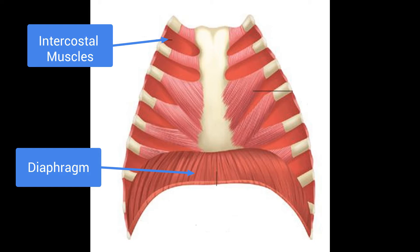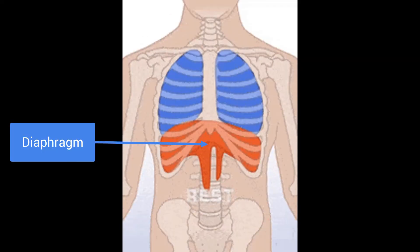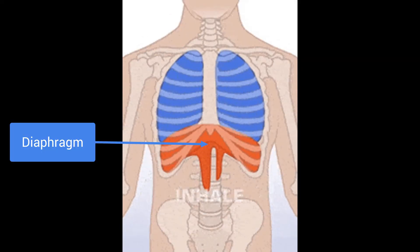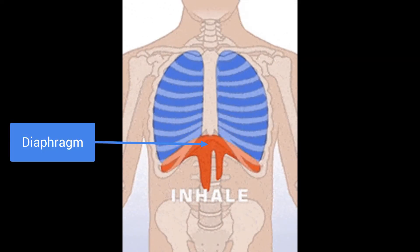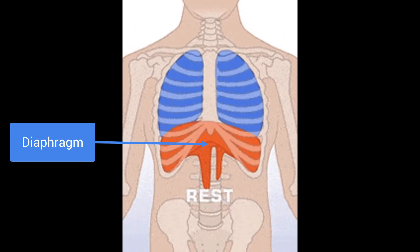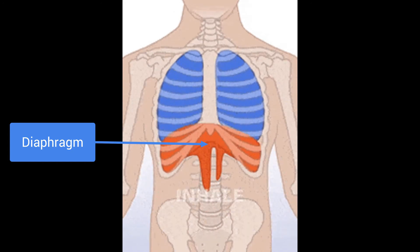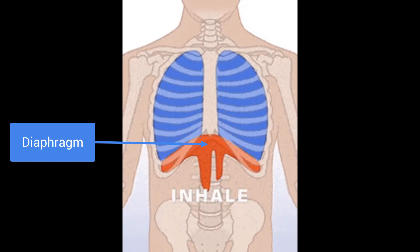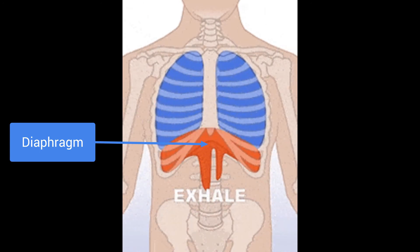This is where gas exchange takes place. The diaphragm and the intercostal muscles are responsible for ensuring that we breathe. The intercostal muscles lie between the ribs, whereas the diaphragm sits beneath the lungs. When the diaphragm contracts, it moves downwards into a flatter position, which allows the lungs to expand and take in air. This causes inhalation, also known as breathing in.